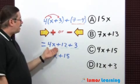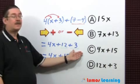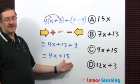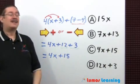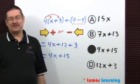If there's nothing to combine with 4x, just write it again. We can combine 12 and 3. 12 plus 3 is 15. The answer is choice C, 4x plus 15.